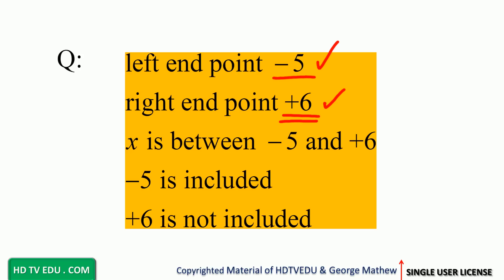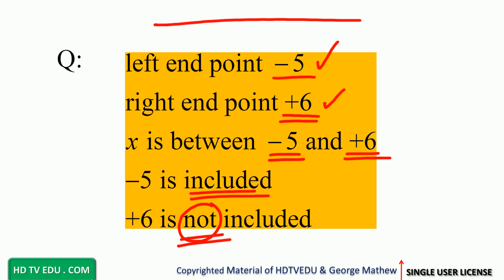X is between negative 5 and positive 6. Negative 5 is included. Positive 6 is not included. So here is our number line.